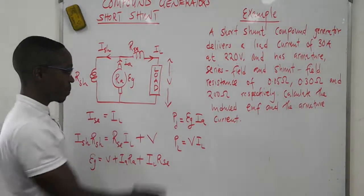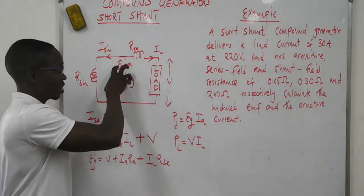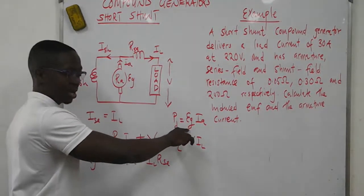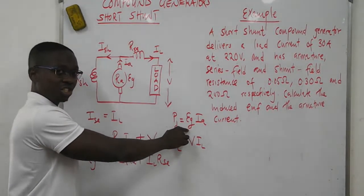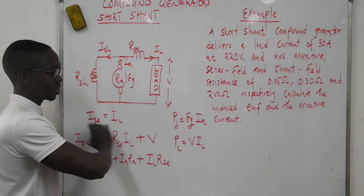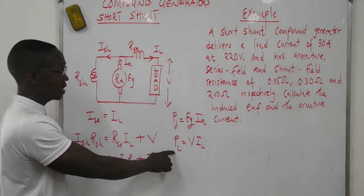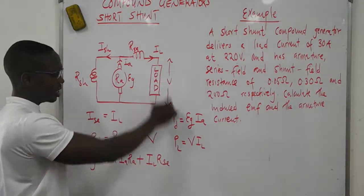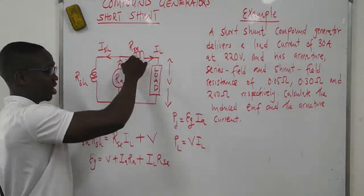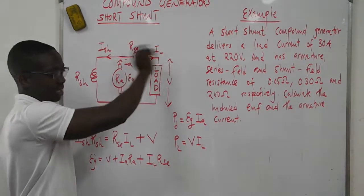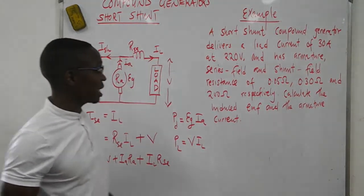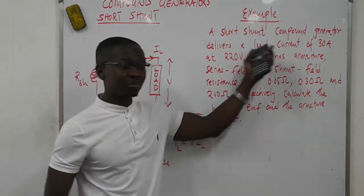Then we have the power developed in the armature, which is given by the voltage generated times the armature current. Whereas the power delivered to the load is given by the voltage at the load and the load current, or the series current since it's the same. These are the relationships. So with that said, let's try to attempt the question.